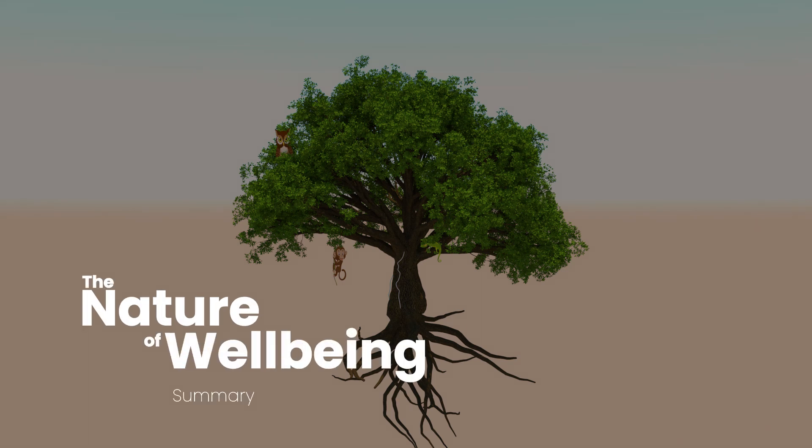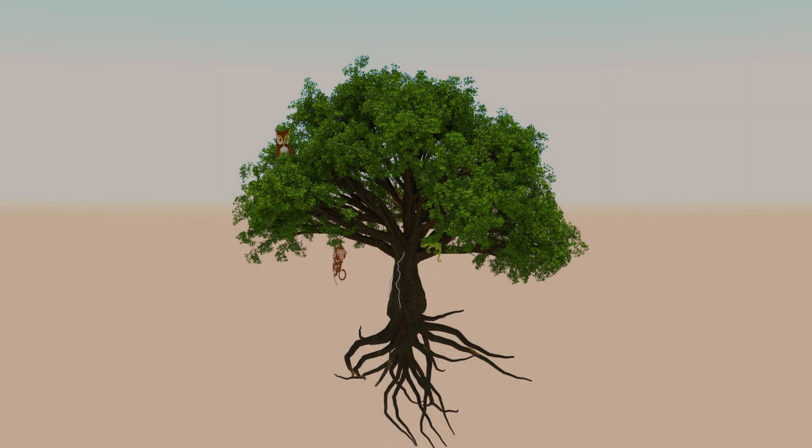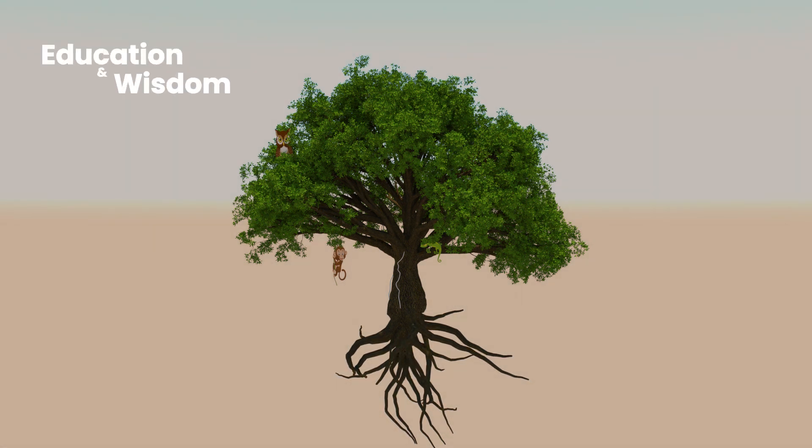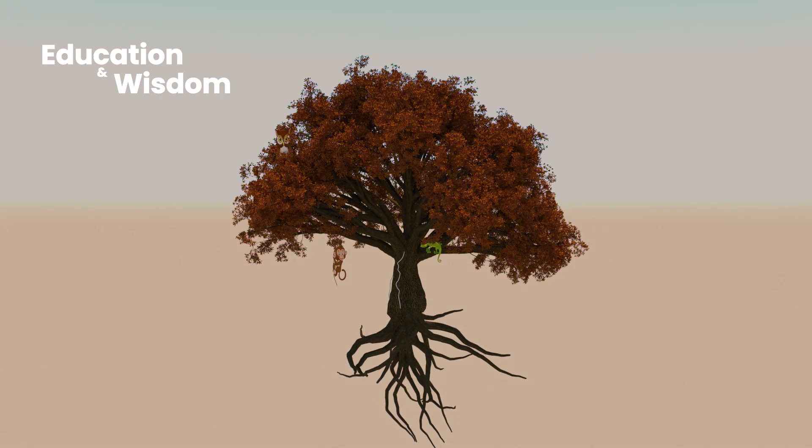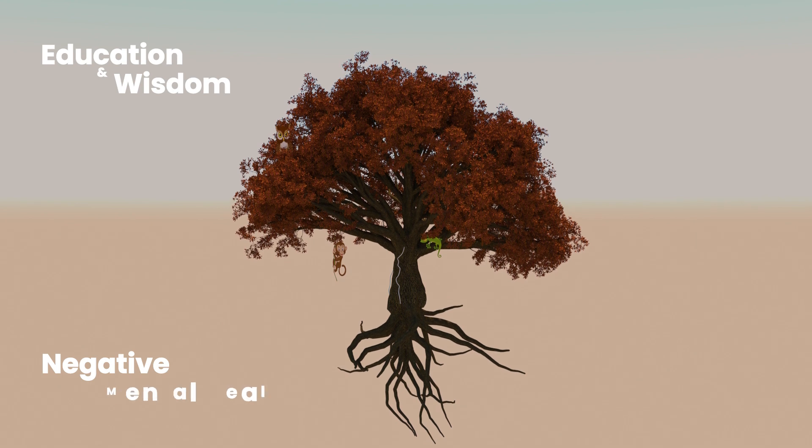The nature of well-being summary. From this model we can see that if we can strengthen the owl part of our brains with education and wisdom, we can silence the signals from the monkey and the lizard that tend to make us have negative mental health.